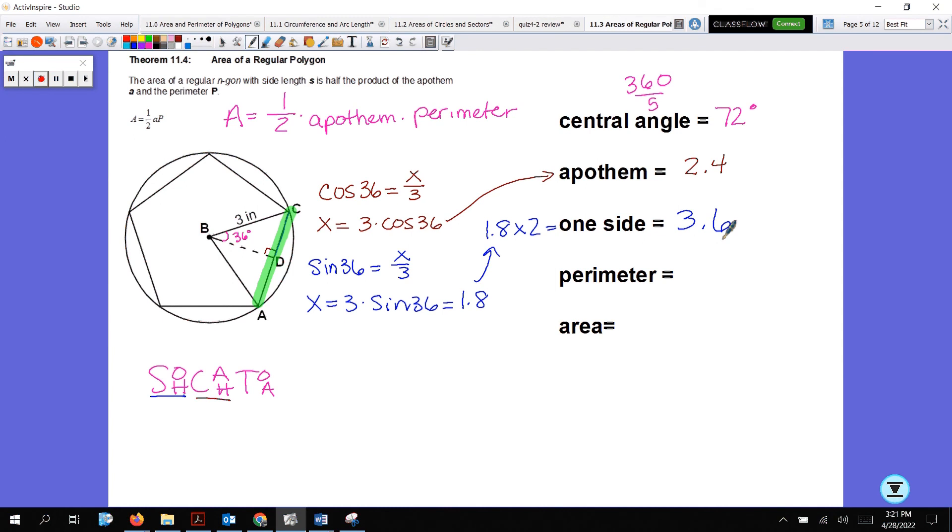That's kind of the hard part. Now the perimeter of this, we know it has five sides. One of the sides is 3.6, so 3.6 times 5 is 18. The perimeter is 18. Now the area. I just gave you the formula for area. The area is one-half times the apothem, which is 2.4, times the perimeter, 18. And when I plug it in my calculator, I get 21.6 inches squared.